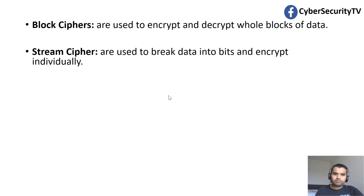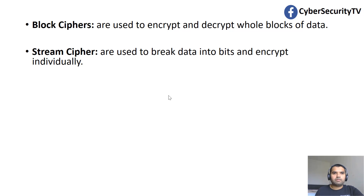Stream cipher is used to break data into bits and encrypt individually, bit by bit, which is very useful. The most simple example is video streaming on our smartphones, smart TVs, and tablets. We don't wait for the entire block — we keep receiving data and stream it right away, instead of waiting for an entire block of data. That would break the user experience. That's why stream cipher is very useful in that scenario.